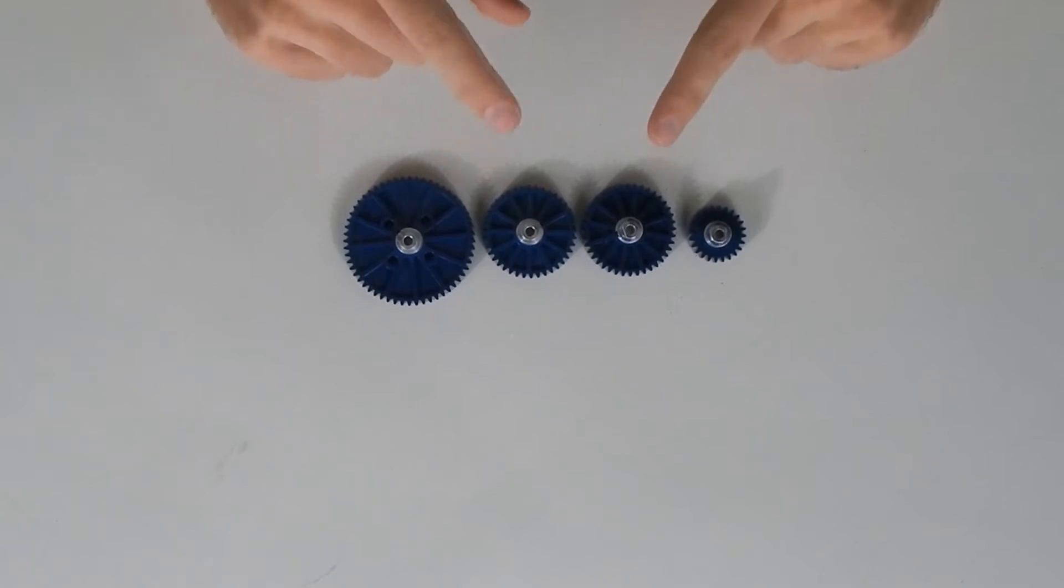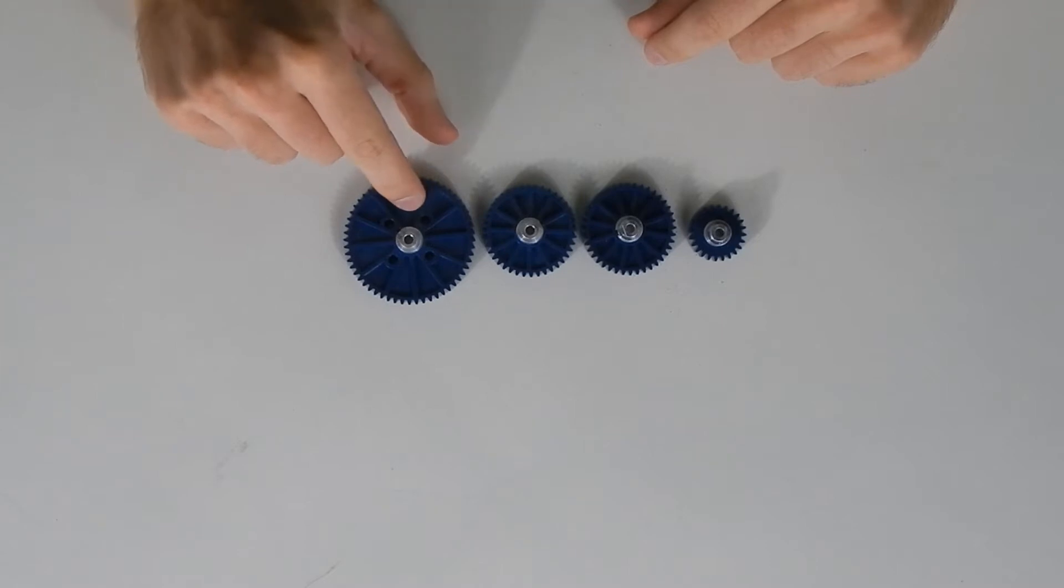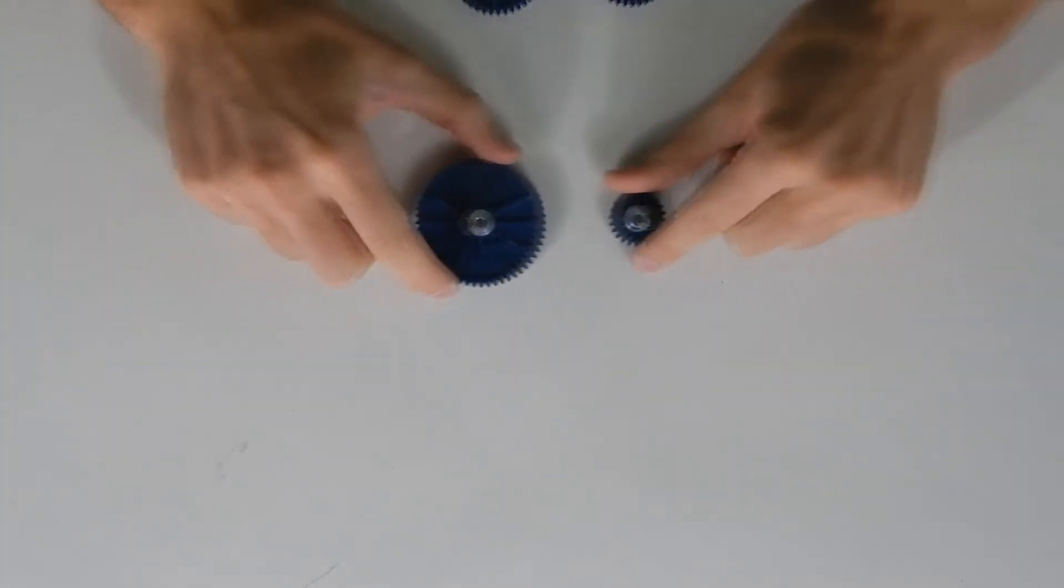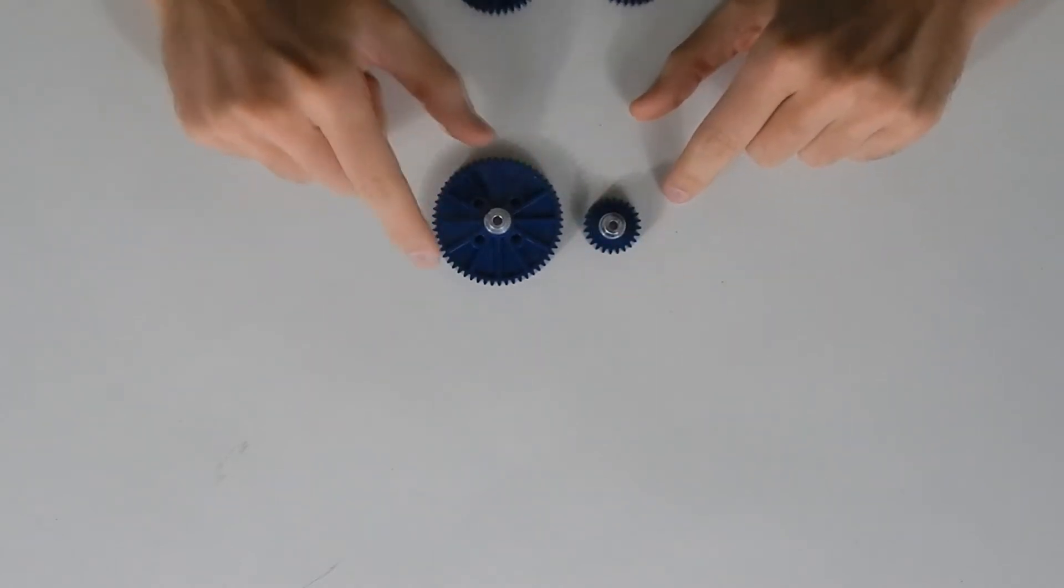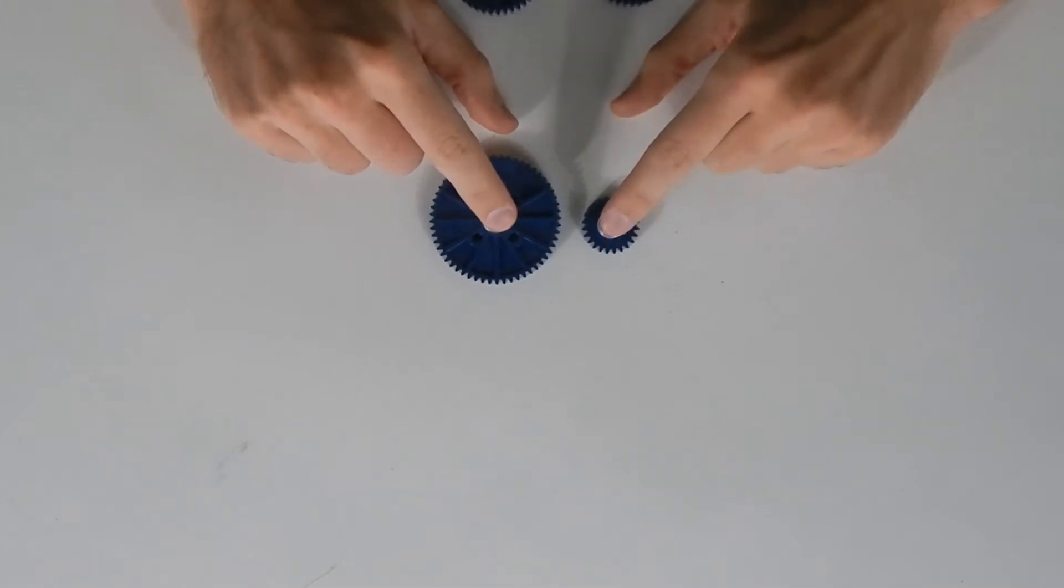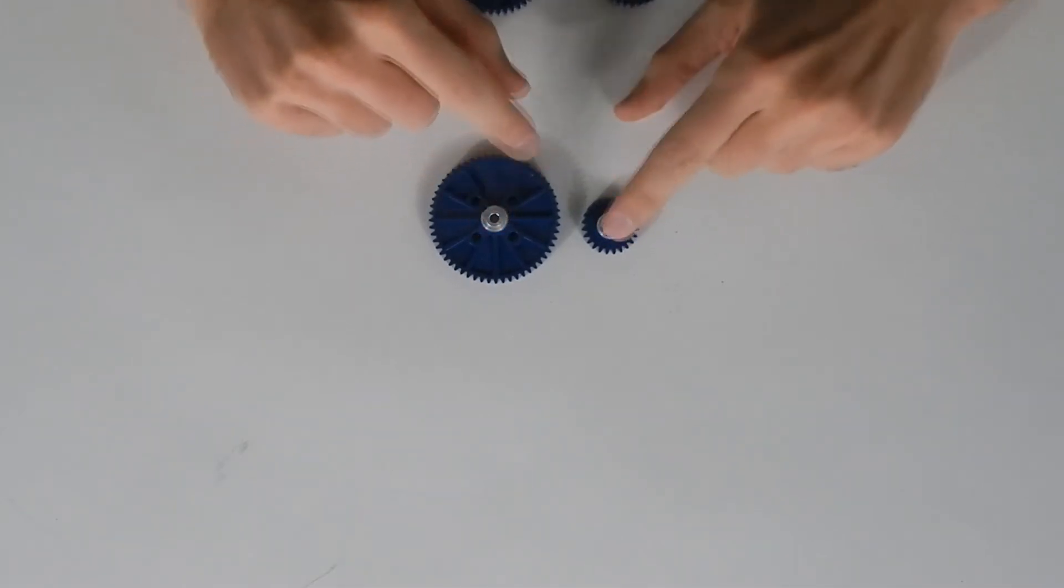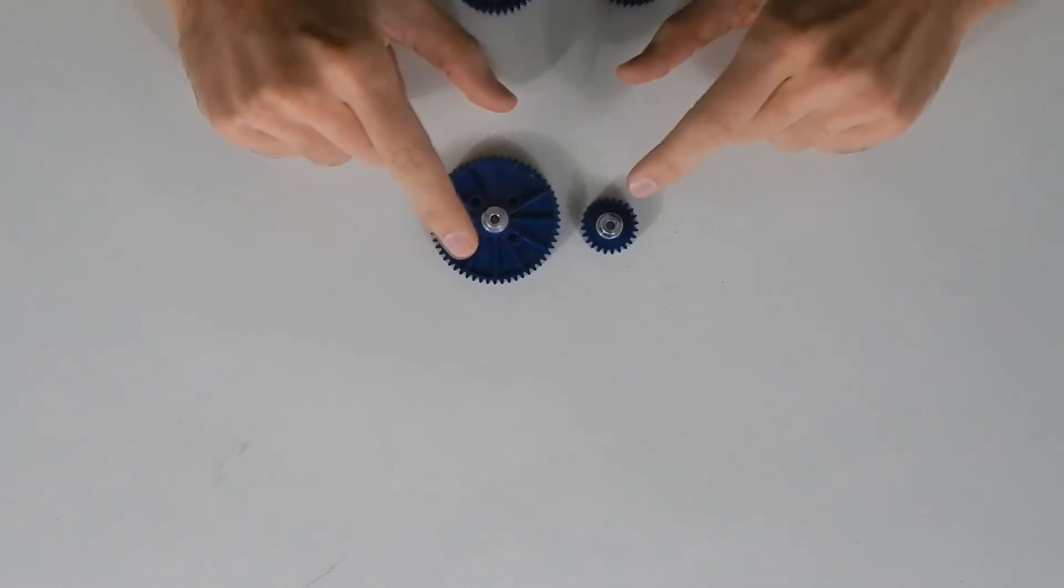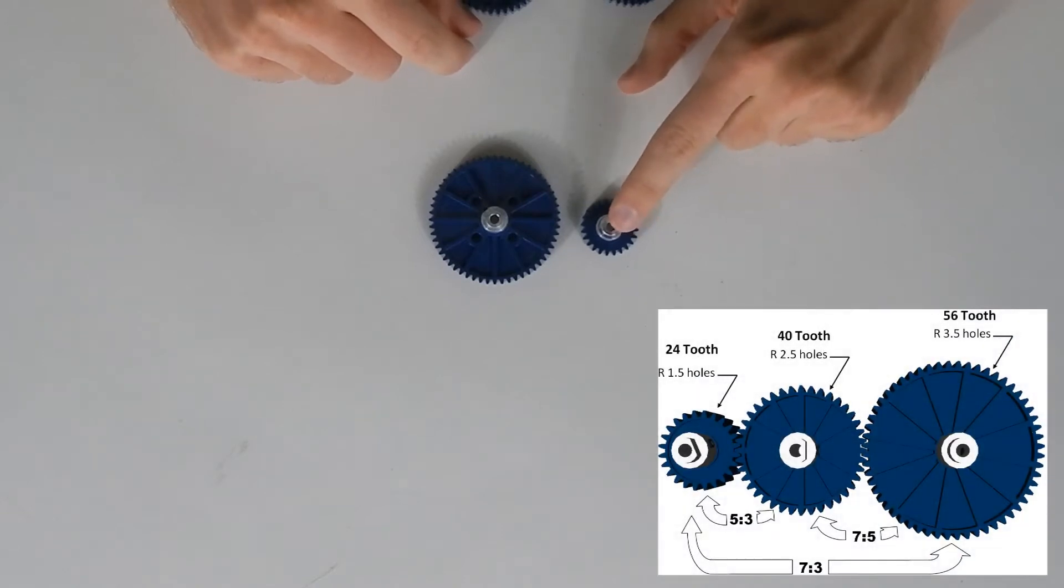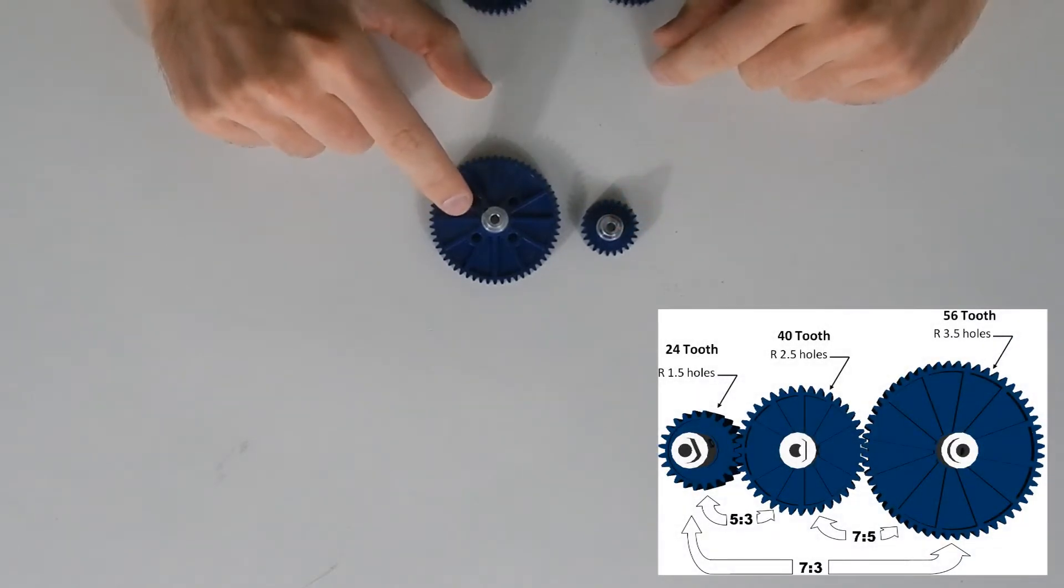We can also use gear ratios to our advantage. We can calculate the gear ratio by having the teeth on one gear to the teeth on the other gear. Gear ratio is the ratio of how many times one gear is going to turn to how many times the other gear is going to turn. So if we take this gear that has 24 teeth and this gear that has 56 teeth, we reduce those numbers. It'd actually be 56 to 24. We reduce it down and we get seven to three. So the small gear is going to spin seven times for every time the big gear spins three times.